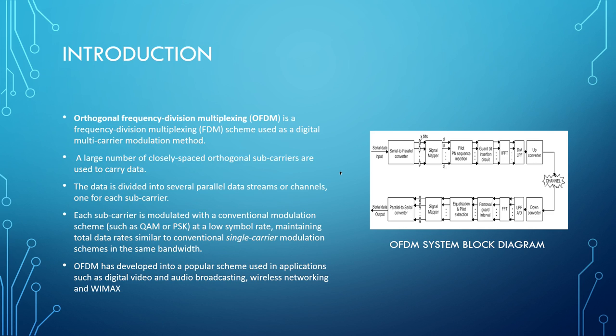Here data is first taken in as serial data and divided into parallel data streams. Each data stream or subcarrier is modulated with conventional modulation schemes like QAM or PSK at a low symbol rate. Each subcarrier exploits the fact that it has much more data encoded in it than can be done in a single carrier modulation scheme in the same bandwidth.